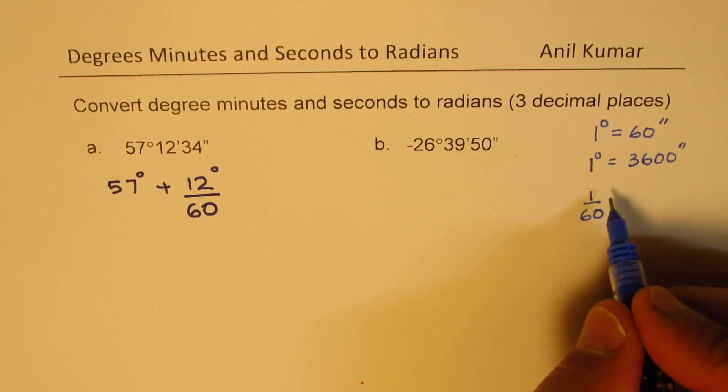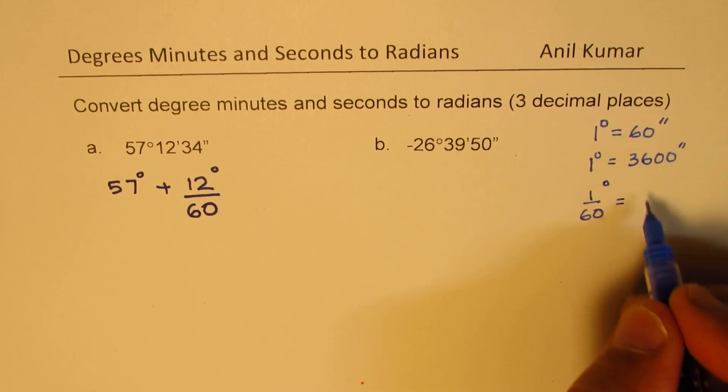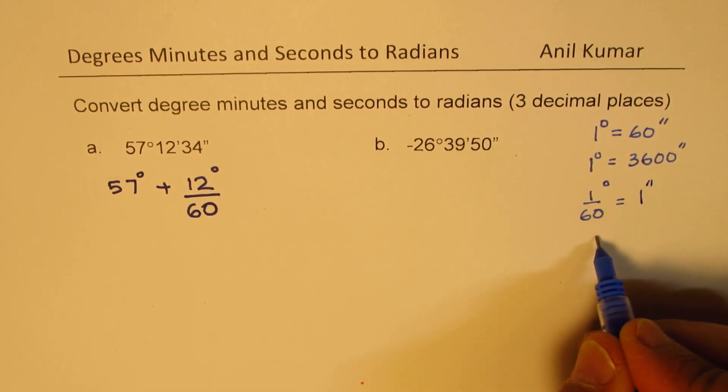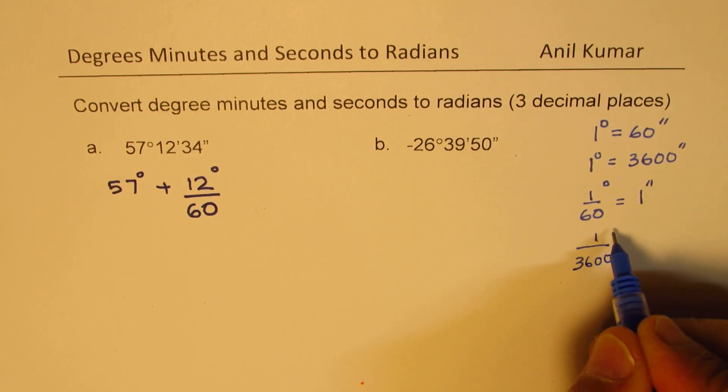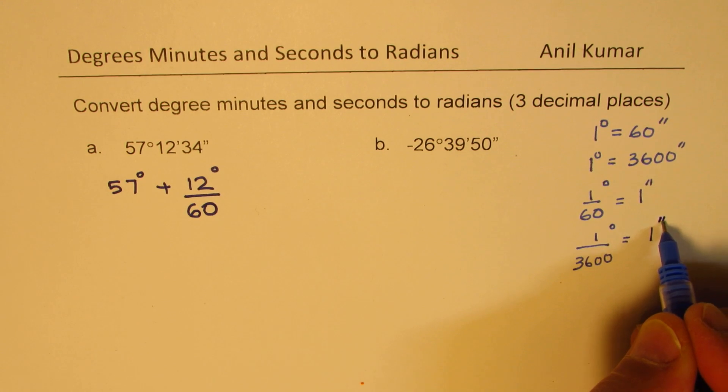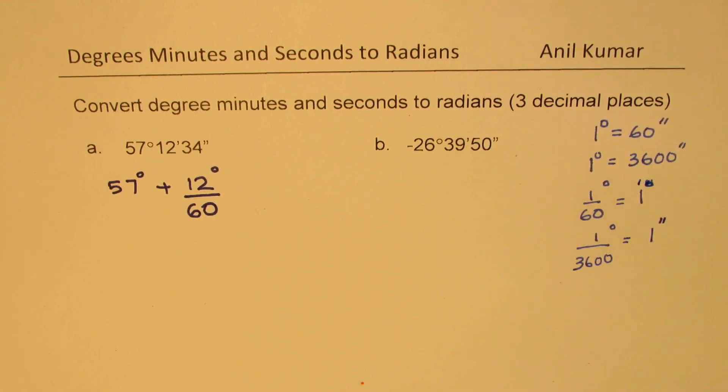You have to divide by 60 to get this in degrees. One over 3600 in degrees will be your one second. So one minute means one dash. That is how we are going to use the conversion factors.